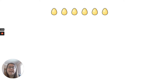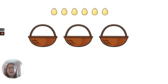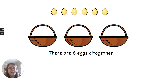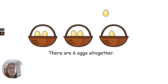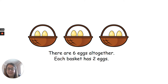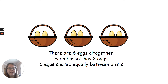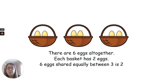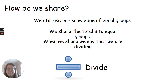So we've got six eggs first of all and three baskets. Six eggs altogether and we're going to split them into three baskets, so each basket has two eggs. So six eggs shared equally between three is two. We've shared them equally between the baskets.